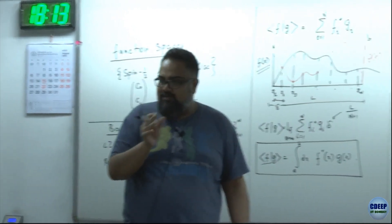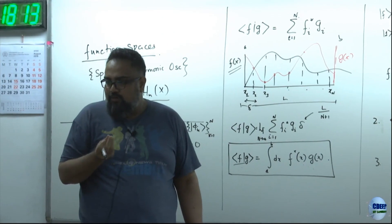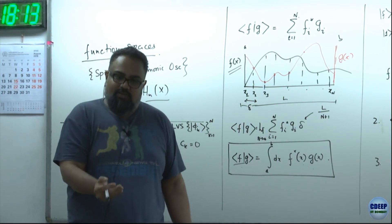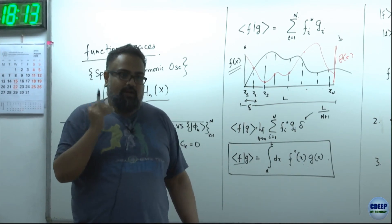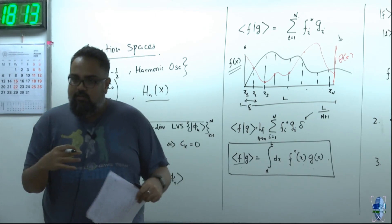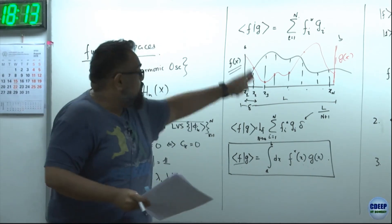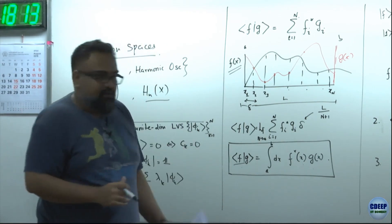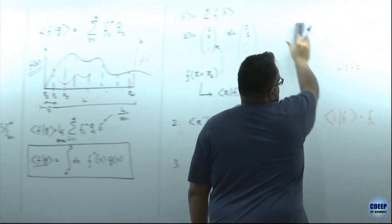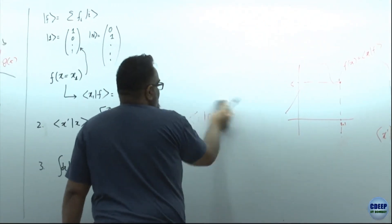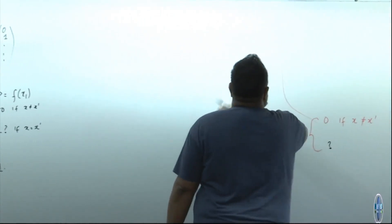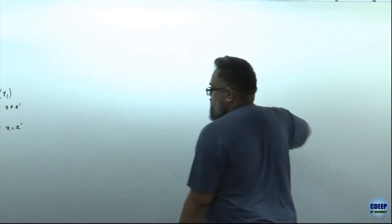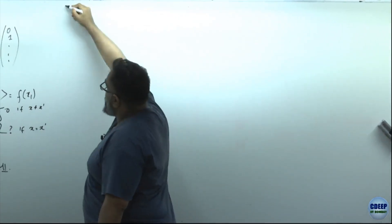Everywhere you are making multiplications, you will end up doing integration - multiplication followed by summation becomes integration, as you can see from this example. That's the correct way to replace one with the other. Now we have an interesting conundrum.